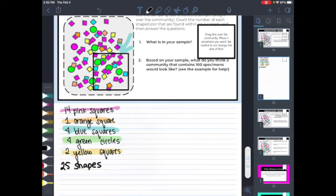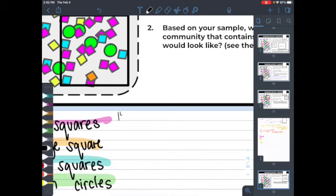So let's start with the 14 squares. We have 14 pink squares out of a total of 25. That means that 14 out of the 25 shapes in my sample are pink squares. When I do 14 divided by 25 on a calculator, that gives me a total of 0.56. Now I have to convert this to a percent, move the decimal twice, gives me 56%.